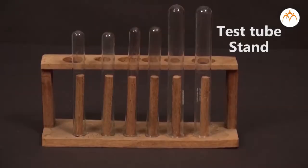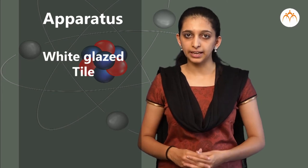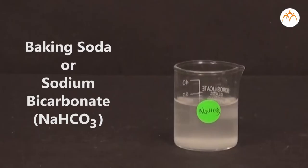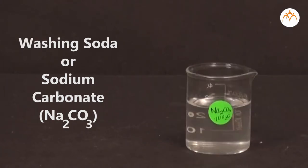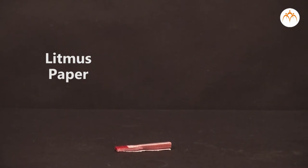For this experiment, we require test tubes, test tube stand, Petri dishes, white tile, etc. We also need baking soda or sodium bicarbonate (NaHCO3), washing soda or sodium carbonate (Na2CO3), litmus paper, and pH paper.